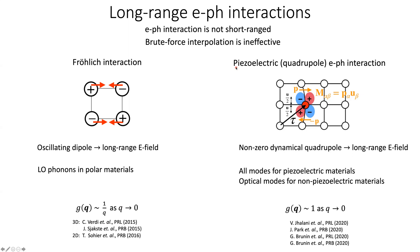The second is the piezoelectric quadrupole electron-phonon interaction. This occurs because a non-zero dynamical quadrupole in a solid, upon atomic displacement, generates a long-range electric field. This interaction happens for all phonon modes in piezoelectric materials and also for optical modes in non-piezoelectric materials. In this case, the strength of g approaches a constant value as q goes to 0.